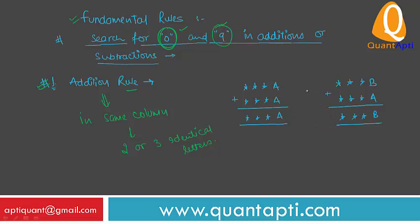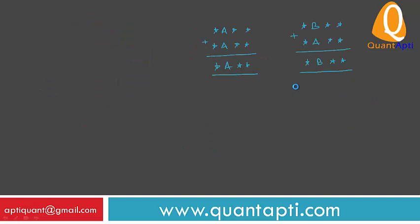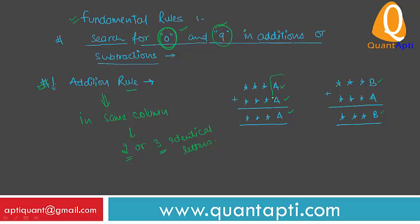Look at these additions. We have A, A, and A — fulfilling the condition of 3 identical letters. If A plus B equals B, then we have B and B, which are 2 identical letters. So if there are 3 or 2 identical letters in the same column, for example A plus A equals A in column 1, we can apply this rule.